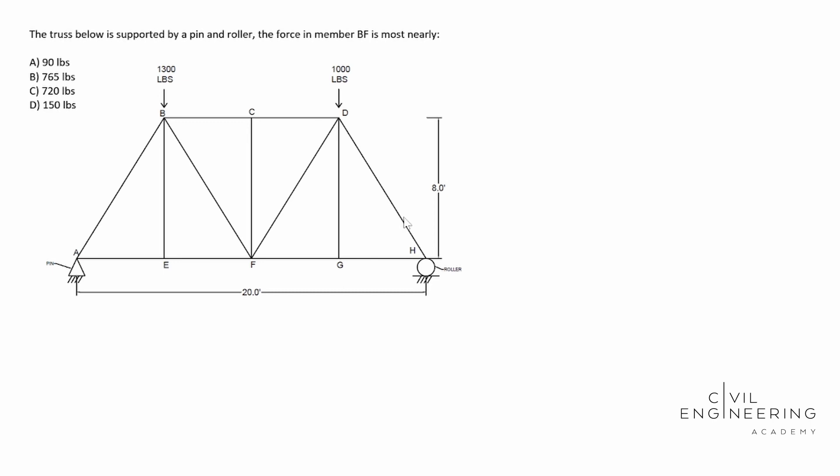So today we have a structural mechanics problem and here's what the question says. The truss below is supported by pin and roller. The force in member BF is most nearly, and we see our four options there available to us in pounds. Okay, so the first step to this is solve for your reactions and we'll determine what's best here later, whether it's method of joints, method of sections.